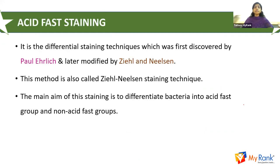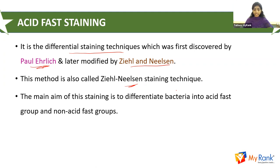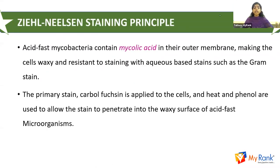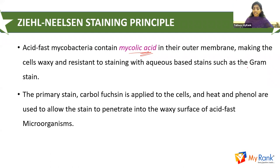Now let's talk about the Ziehl-Neelsen staining method. It is a differential staining technique first discovered by Paul Ehrlich and later modified by Ziehl and Nielsen. The main aim is to differentiate bacteria into acid-fast and non-acid-fast groups. The principle: acid-fastness depends on the integrity of the cell wall. Acid-fast bacteria like mycobacteria contain mycolic acids in their outer membrane, making the cells waxy and resistant to staining with aqueous-based stains such as Gram stain.